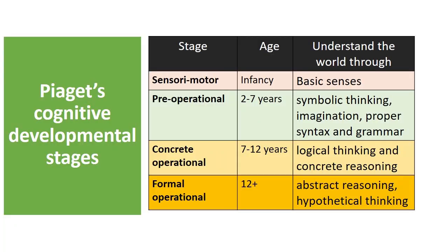Piaget observed that humans go through four main stages of cognitive development. The first stage, at infancy, babies depend on their basic five senses to understand the world around them. The second stage is from age two to age seven, where children start to use symbolic thinking and imagination as they play with toys and use role plays. At this stage, their grammar and syntax develop properly.